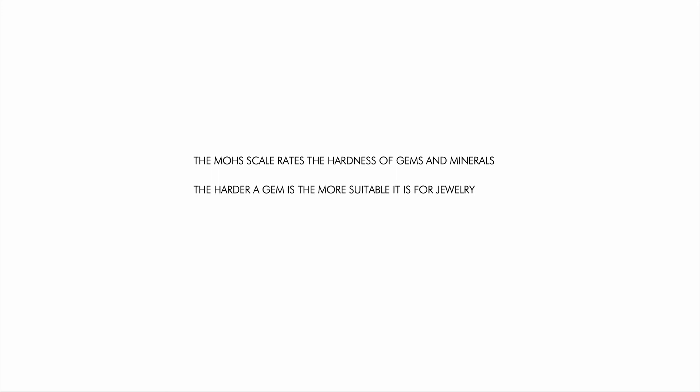The Mohs Scale rates the hardness of gems and minerals, and helps to tell you if they're durable and how resistant they are to scratching. The harder a gem is, the more suitable it is for jewelry. This is different from a gem's toughness, which is defined by how it can survive an impact or resist breaking or cracking. Diamonds are known for being one of the hardest substances on earth, ranking at number 10 on the Mohs Scale, which is the highest level of hardness.